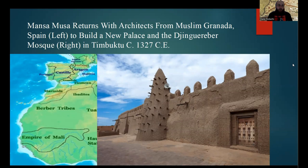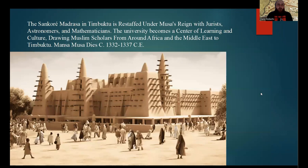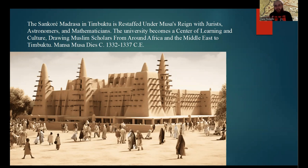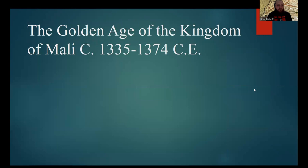After his hajj to Mecca, Mansa Musa returned to the Mali Empire with architects from Muslim Granada, specifically the region of Andalusia, where he used them to build a new palace and a great mosque in the city of Timbuktu — the great mosque still existing to this day. He also rebuilt and restaffed the Sankore Madrasa or university in Timbuktu with jurists, astronomers, and mathematicians, with the madrasa eventually becoming a center of learning drawing Muslim scholars from all around Africa and the Middle East to Timbuktu. Mansa Musa would die somewhere around 1337 CE, with some debate still remaining on the exact date.